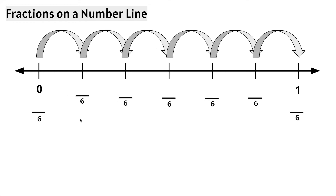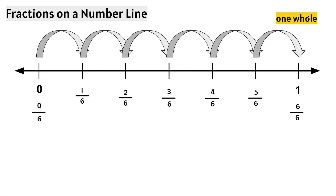That means we will be working with the denominator 6. This tick mark represents 0 — another way to say 0 on this number line is 0 sixths, or we've traveled 0 out of the 6 sections to 1 whole. If we travel 1 tick mark between 0 and 1, we can say 1 out of the 6 equal sections, or 1 sixth. Continuing: 2 sixths, 3 sixths, 4 sixths, 5 sixths, and when we get to 1 whole, we can say 6 sixths, which is the same thing as 1 whole.